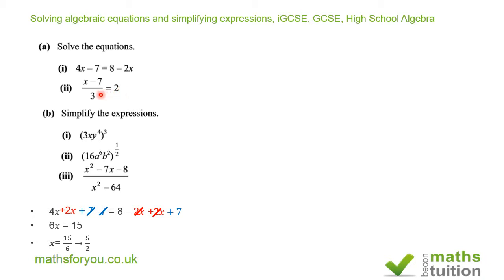For the second equation, we need to eliminate the 3 in the denominator. Multiplying both sides by 3, we get x - 7 = 6. The 3s cancel on the left. Adding 7 to both sides gives x = 13.